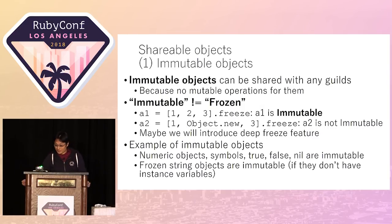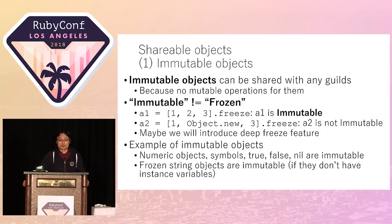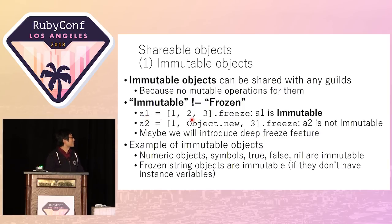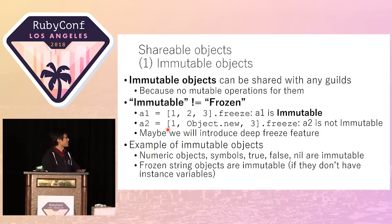The first shareable object type is immutable objects. Sharing an immutable object is no problem — there's no data race issue — because we can't mutate this kind of object. One difficulty is that an immutable object is not equal to a frozen object. For example, array A1 is an immutable object because it is frozen and only points to numeric immutable objects. But array A2 is not immutable — the array is frozen, but the array refers to a mutable object created by Object.new.